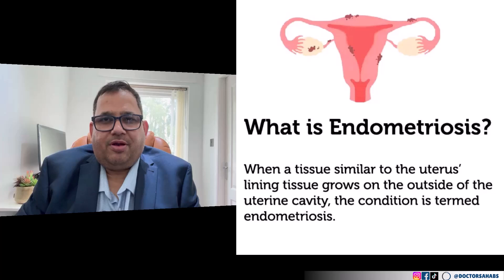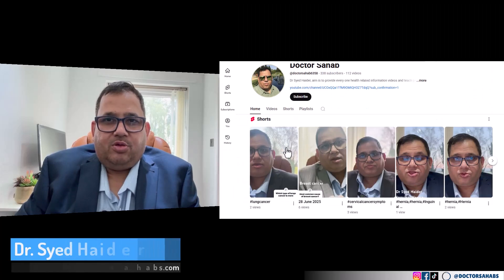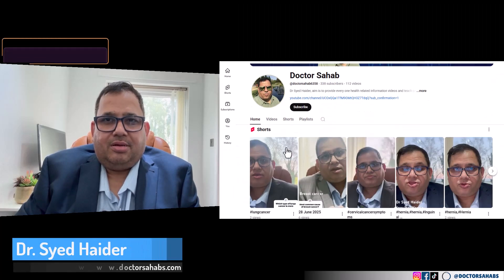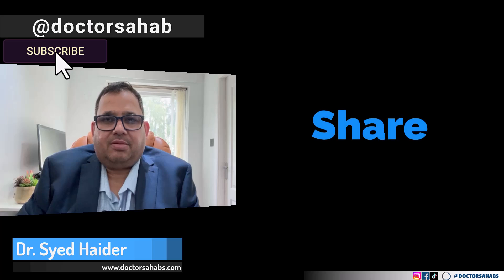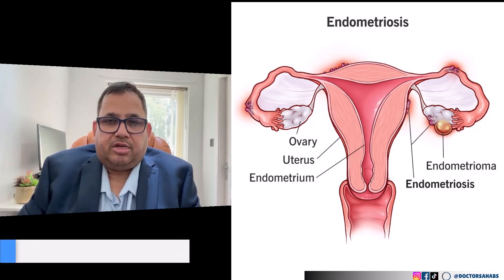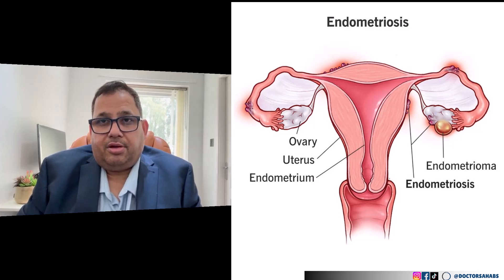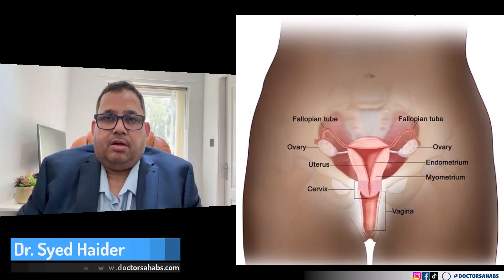Endometriosis is a condition where the endometrial lining or endometrial tissue is present outside the uterus. When the endometrial tissue is present outside the uterus, that means anywhere in and around the uterus. The most common areas of endometriosis are the fallopian tubes and ovaries.